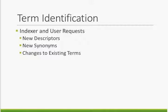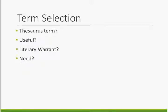Changes to existing terms include adding or revising scope notes, adding or revising relationships, and transitioning terms from synonym to descriptor status, or vice versa. Once we have identified potential additions and changes, we select a group for further development. All indexer and user requests are reviewed, and the final selection is made based on criteria established in the ERIC file guide. For each new term request, we ask: does it qualify as a Thesaurus term? Thesaurus terms must be nouns or noun phrases that represent a subject in a field of education.